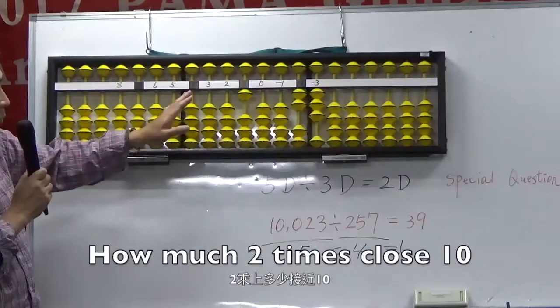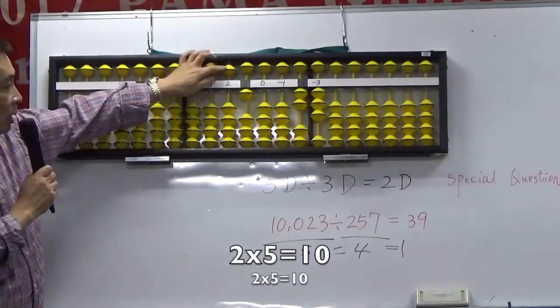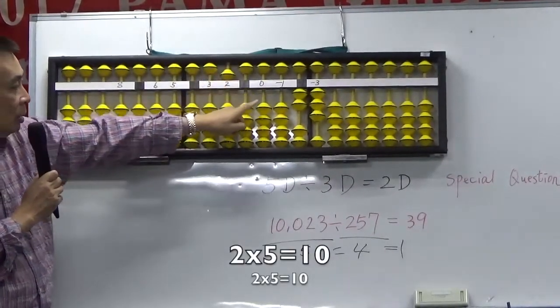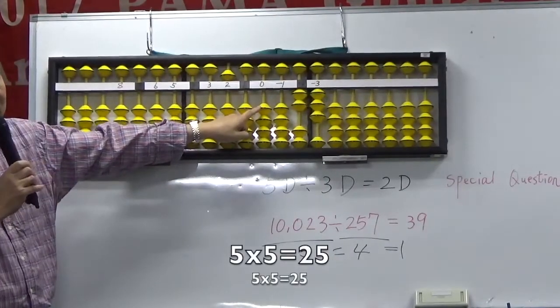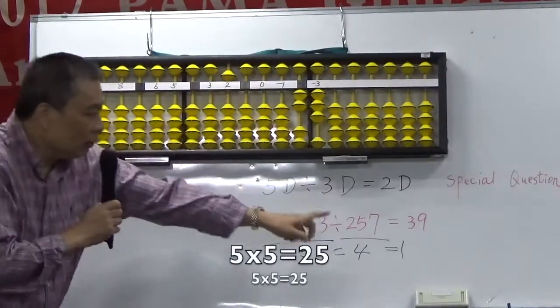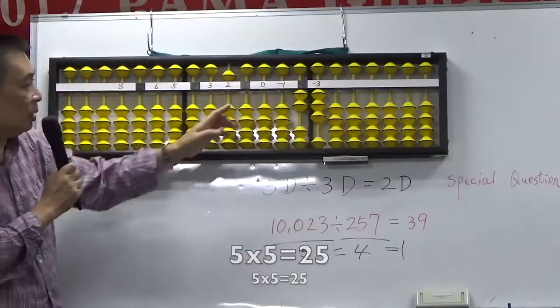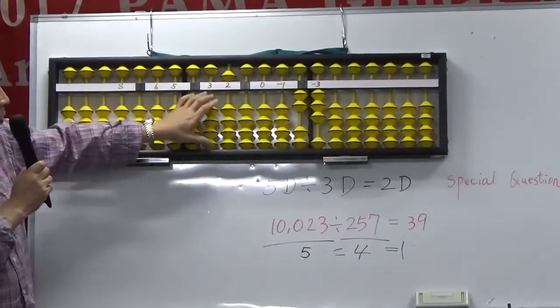To how much? Approach 10. 2, 5 is 10, 5, 5, 25. No answer, not enough.